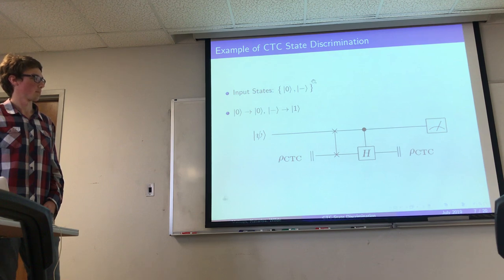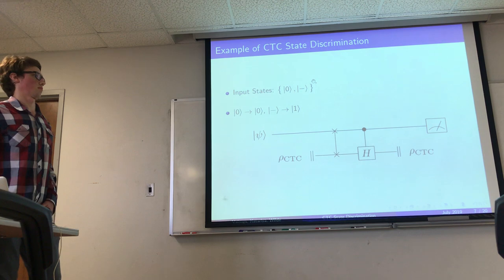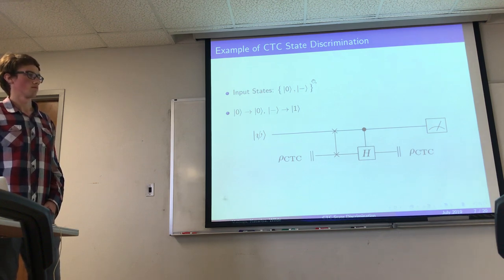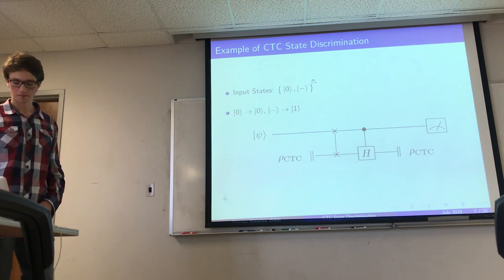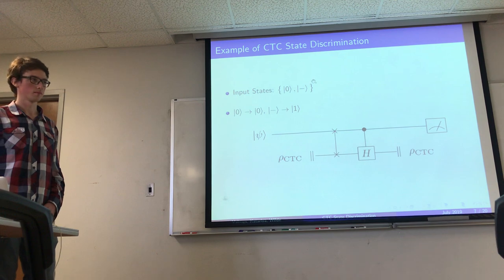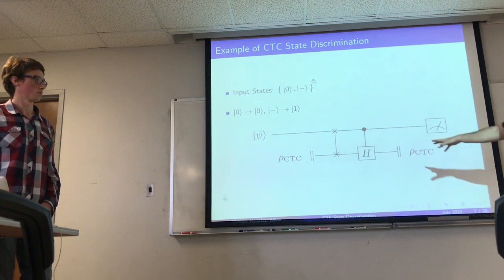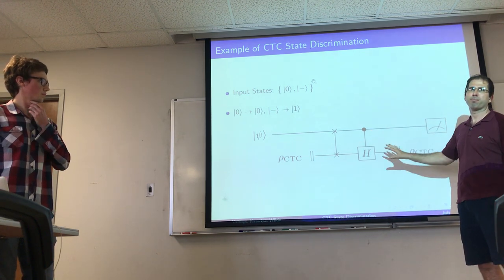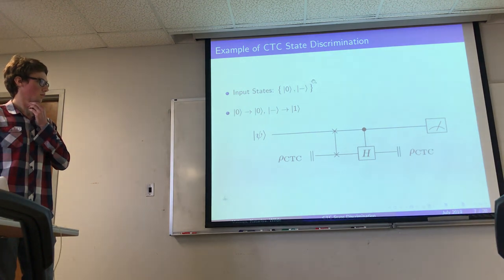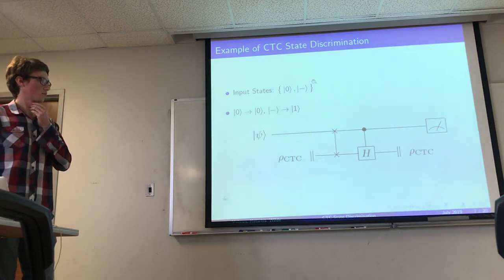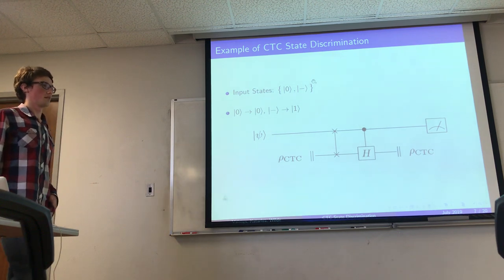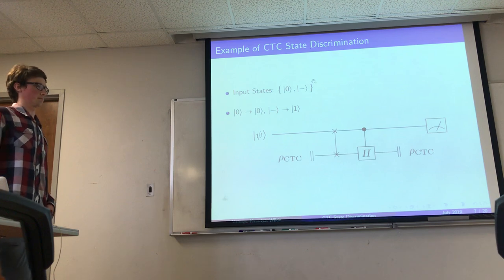All these weird things become possible if a CTC were to behave this way. Many people since Deutsch's work have questioned whether this is a good model of the CTC. But what we find here is that at least this idea can be put to use: mathematically, the CTC state is a fixed point of the evolution — a channel induced by the unitary interaction and partial trace.